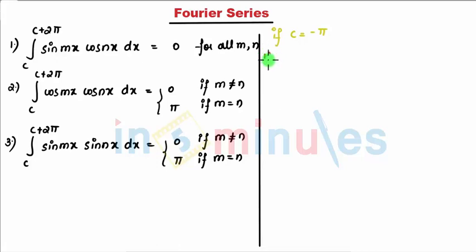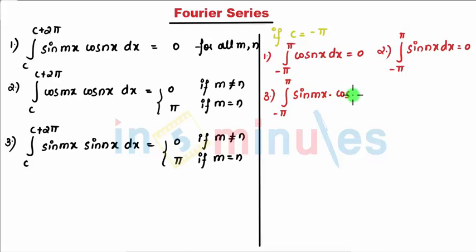First: minus π to π, integral of cos(nx) dx equals zero. Second is minus π to π, integral of sin(nx) dx equals zero. Third: integration of minus π to π, sin(mx) times cos(nx) dx equals zero. That works for all m, n.